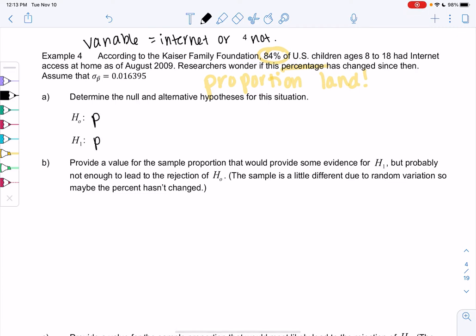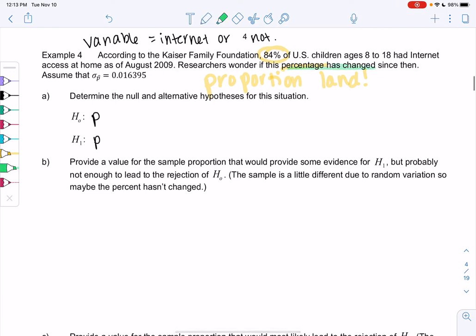Whenever we have those two choices, we're doing proportions instead. So my hypothesis, H0 and H1, will involve P. And then it looks like I'm trying to prove that the percentage has changed. So what math notation would represent change? So change could be in either direction. So this is where we have a not equal.